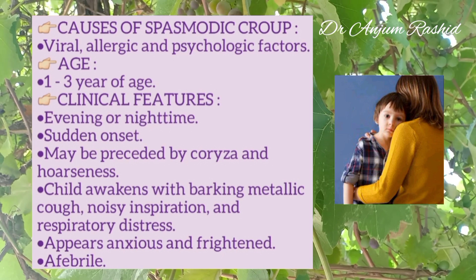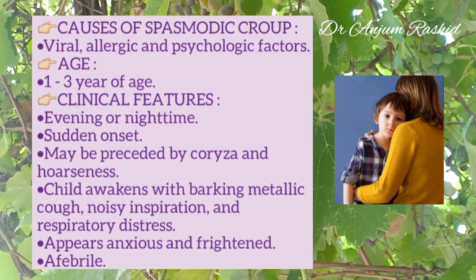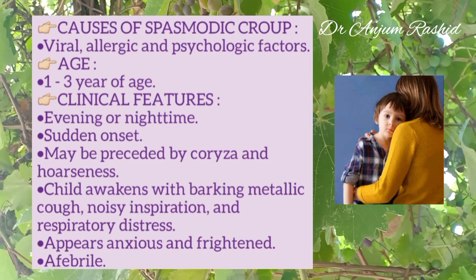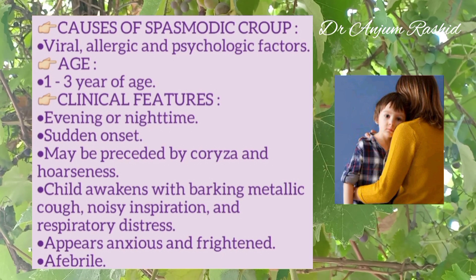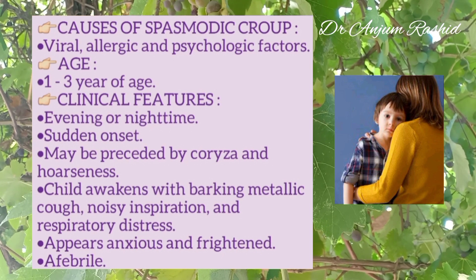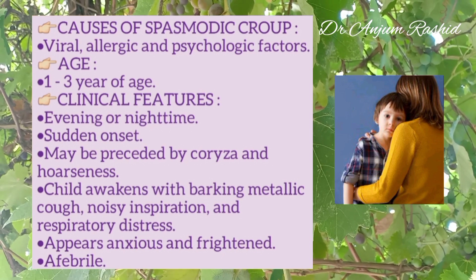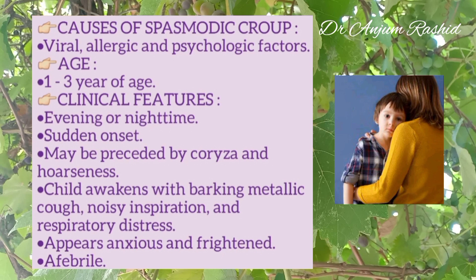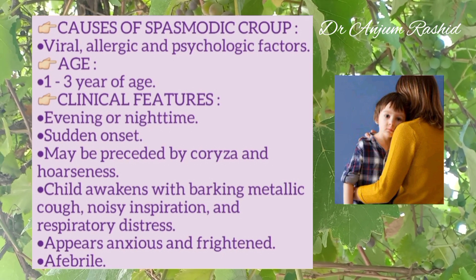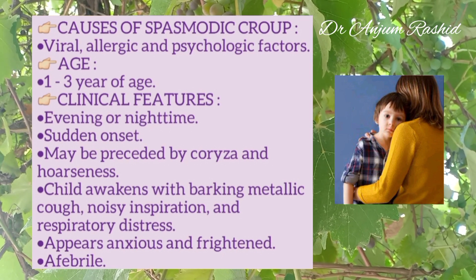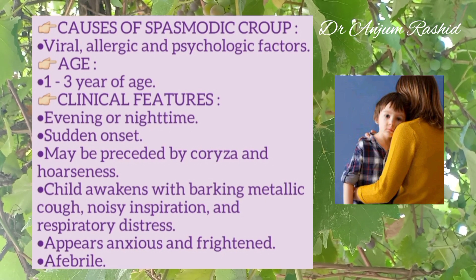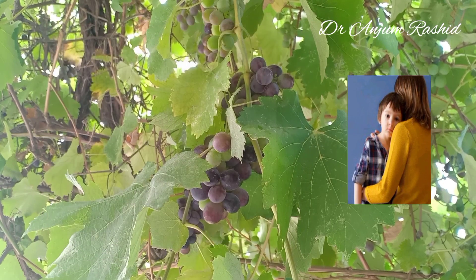Spasmodic croup is clinically similar to viral croup but it usually occurs in the evening or nighttime. It is sudden in onset but may be preceded by mild to moderate coryza and hoarseness. The child awakens with a characteristic barking metallic cough, noisy inspiration and respiratory distress, appearing anxious and frightened but usually afebrile.